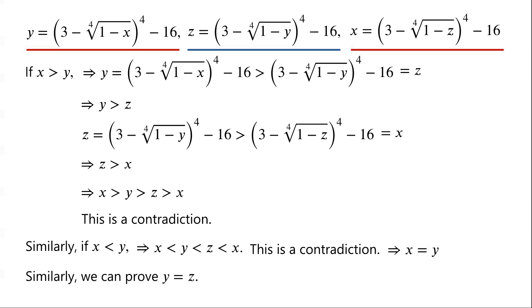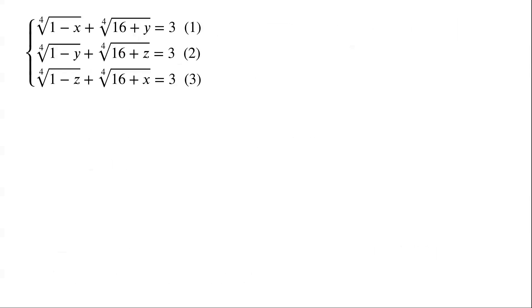Similarly, we can prove that y must equal z. So to satisfy the system of equations, x must equal y must equal z. Now the system of equations becomes a single radical equation.